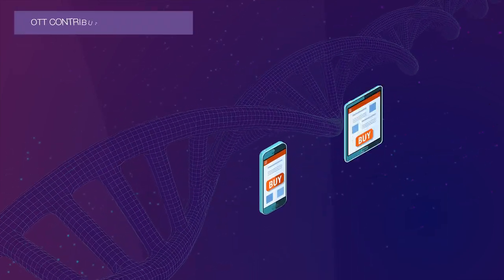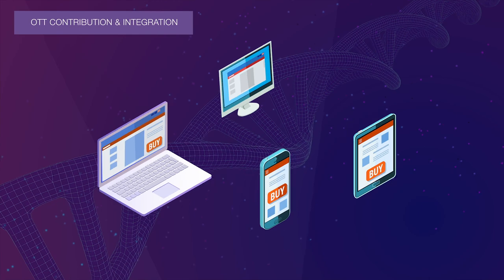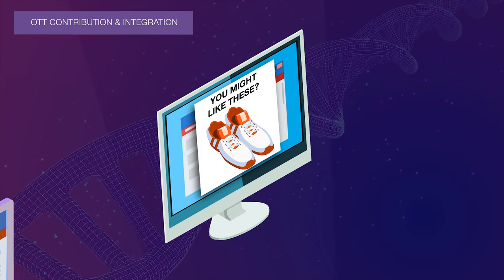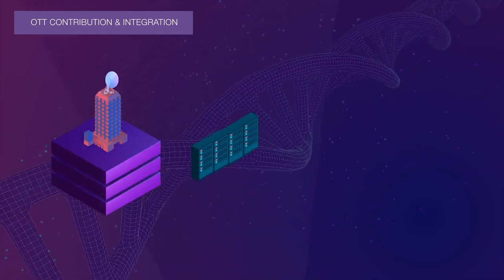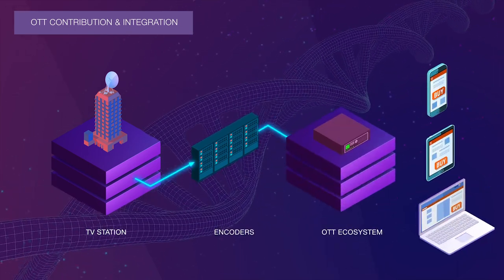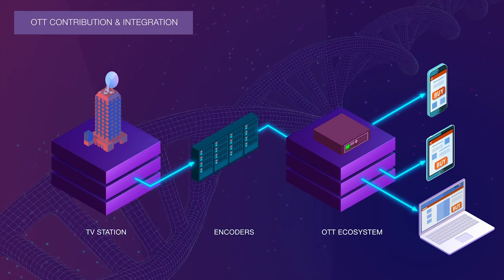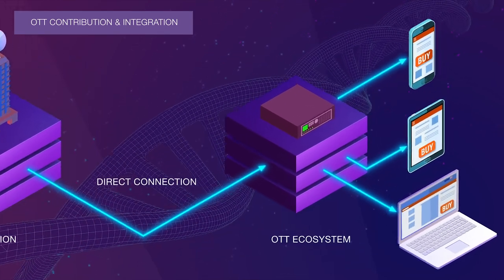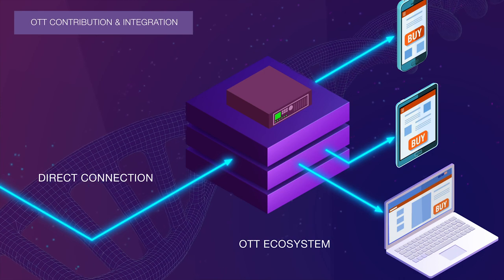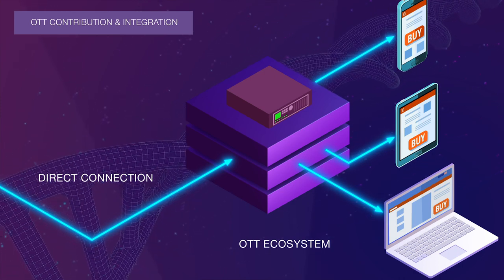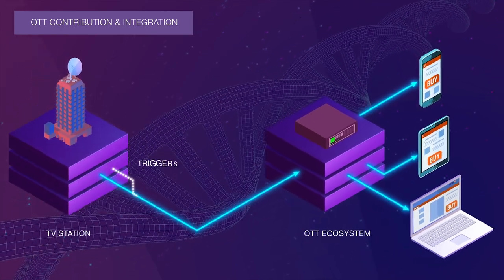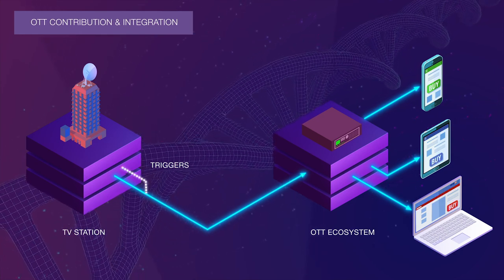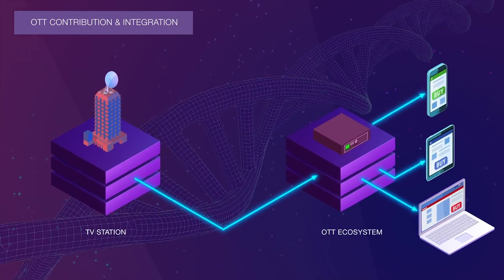Media organizations are increasingly looking to generate a contribution for OTT delivery from their linear channels, primarily to take advantage of personalized advertisement monetization. Generating an OTT derivative of an existing channel can be a complicated process, as it often involves third-party equipment. However, Grass Valley removes the need for additional third-party systems by providing an OTT-friendly stream directly from your linear channel. Grass Valley Playout solutions support a wide variety of output streams, some specifically for use as an OTT contribution. We automatically insert the triggers required to allow various big data services to insert personalized commercial content. This is the simplest and most cost-effective way to originate an OTT channel.